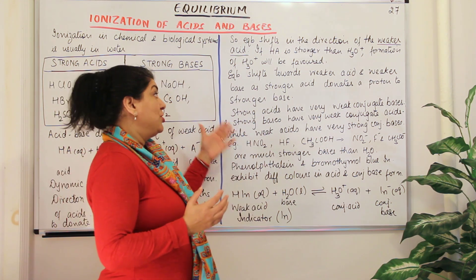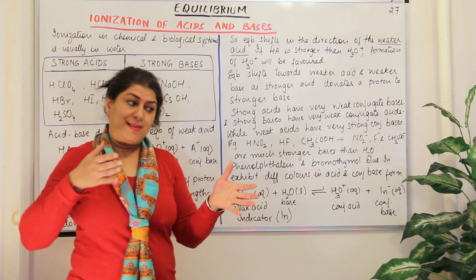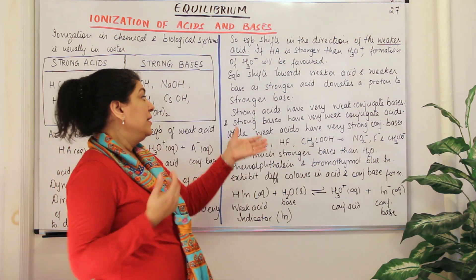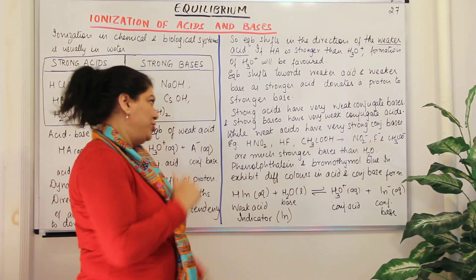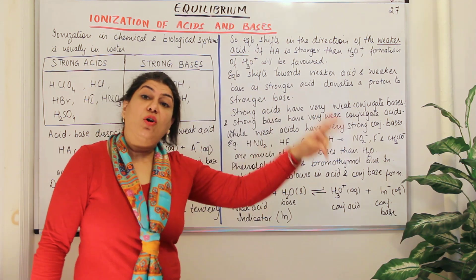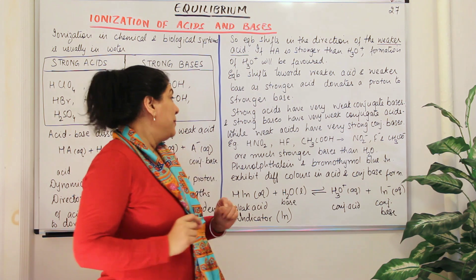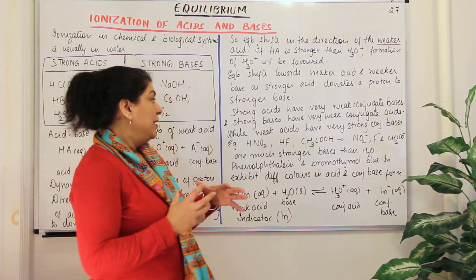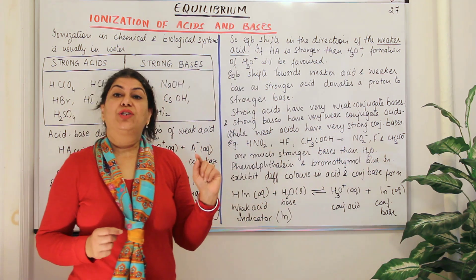Strong acids have very weak conjugate bases and strong bases have very weak conjugate acids. A strong acid will almost completely favor the forward reaction since its conjugate base is weak. Strong acids and bases always go towards completion. A weak acid, on the other hand, will form a very strong conjugate base — therefore the backward reaction would be favored. For example, the weak acids HNO₂, HF, and CH₃COOH — when they dissociate, they result in the formation of NO₂⁻, F⁻, and CH₃COO⁻ respectively.